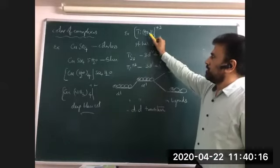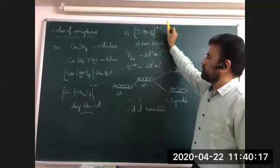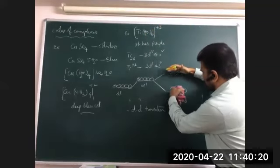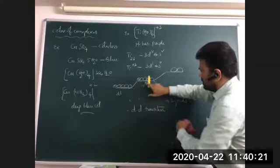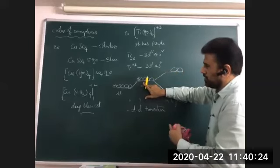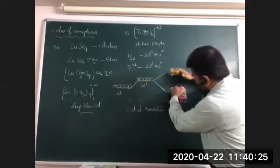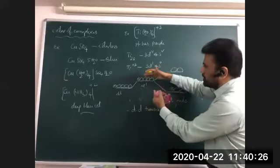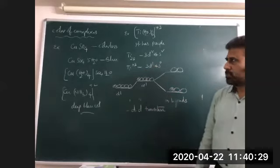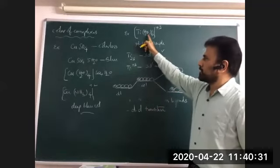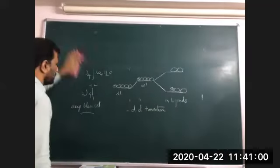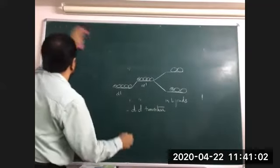If the complex is heated and water molecules are removed, there is no chance of d orbital splitting — it will revert to a free metal ion state. Without splitting, there is no d-d transition possible. So colors are due to complex formation by the ligand.